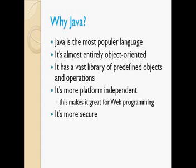Why Java? Java is the most popular and top ranked language in the whole world. It is an object-based language with a vast library of different classes and operations which can be simply implemented to build better programs. It is more platform independent and provides a new interface for web programming which is secure.